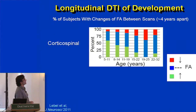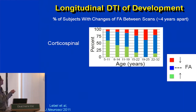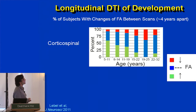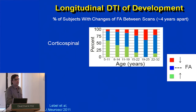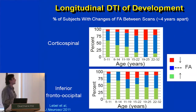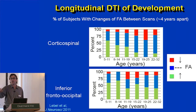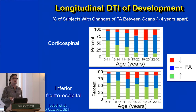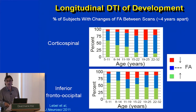We can also do longitudinal studies. In a follow-up scanned about four years apart, the colors represent the percent of subjects that either went up in FA (green), stayed the same (blue), or went down. In 5-to-11-year-olds, about 50–60% are increasing FA over those four years. That gradually decreases through the 20s, where really not many are going up and the proportion going down is increasing. Interestingly, association tracts like the IFO — even in the 22-to-32 age range — had 40 to 50% of people still increasing FA. So white matter tracts were still developing in that age range, which you'd lose in cross-sectional data given the scatter. Longitudinal studies will be much more powerful tools for diffusion analysis in the future.